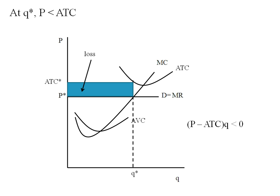So P minus ATC times Q. If that's less than zero, we have negative profits, or we have a loss.